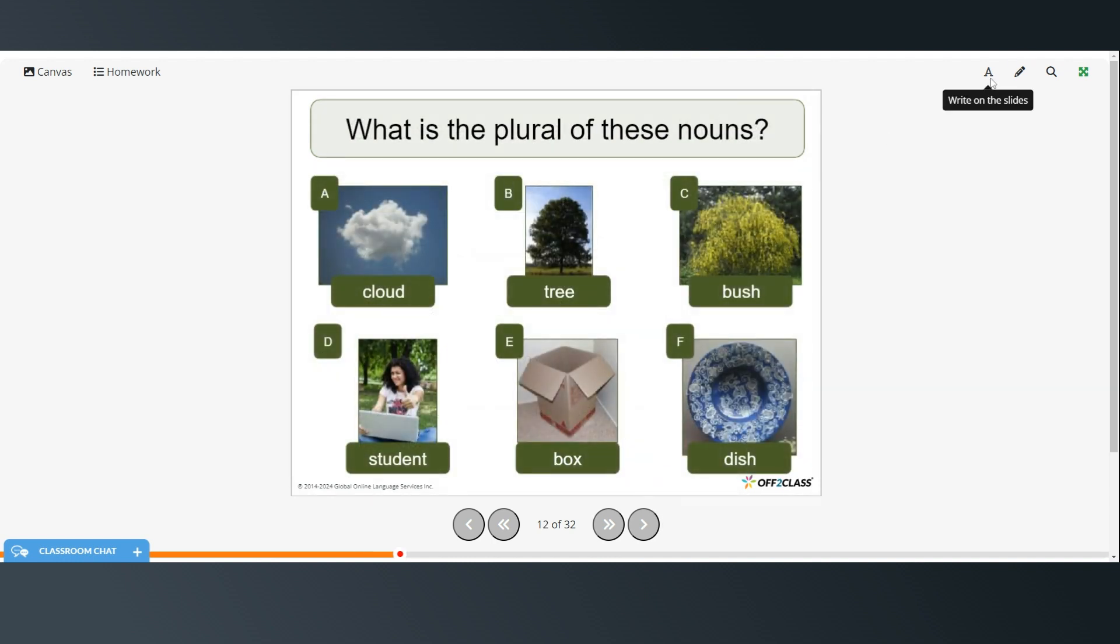All right, again, what is the plural of these nouns? So A would be clouds with an S. B would be trees with an S. C would be bushes because of the SH there at the end. We have to add an ES. Okay, so D would be students, just adding an S. So here we have box that ends in an X. So it's going to be an ES at the end, so boxes. And dish ends in an SH, so it becomes dishes.